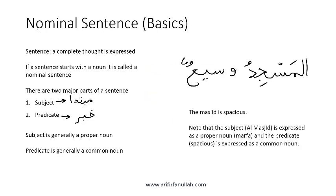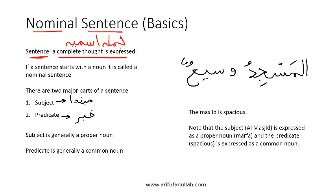In this lesson, we will talk about nominal sentences or Jumlah Ismiyya. As we've said before, with a Murakkab or a compound, a partial thought is expressed, whereas with a sentence, a complete thought is expressed.